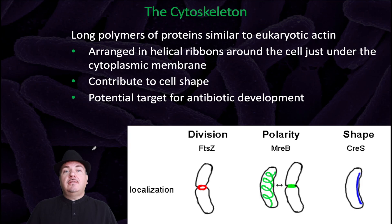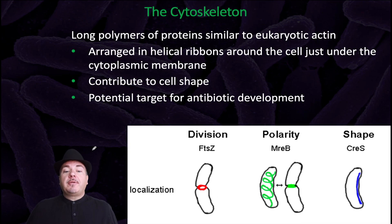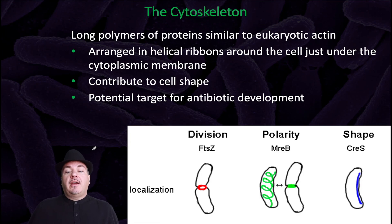Bacteria have a cytoskeleton. Eukaryotes also have a cytoskeleton, but the bacterial cytoskeleton is made out of different types of components. The bacterial cytoskeleton is long polymers of proteins, which are similar to the actin proteins in eukaryotic cells. They can be arranged in helical ribbons around the cell, just under the cytoplasmic membrane. They can contribute to the cell's shape, and they're a potential target for antibiotic development, since bacteria have these particular proteins and eukaryotic cells do not.